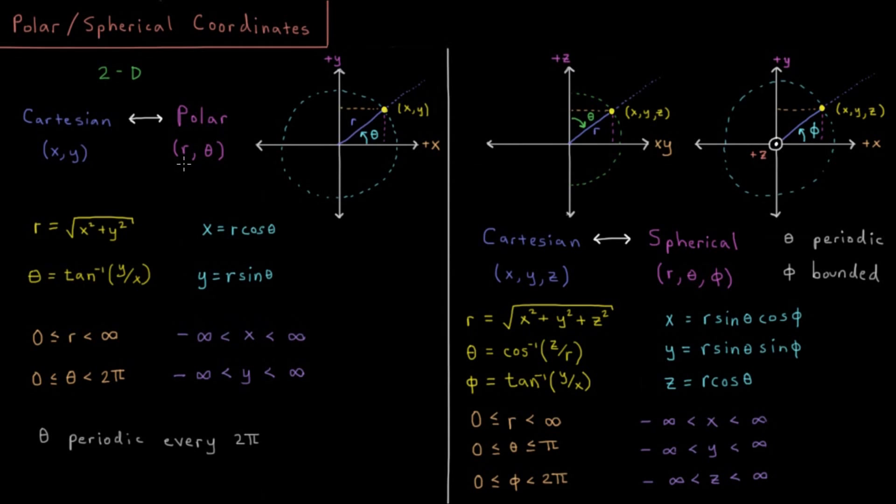So that's polar coordinates in two dimensions. The analog of that in three dimensions is what you would call spherical polar coordinates, or sometimes called spherical coordinates. So in Cartesian, in three dimensions, we would have an x, y, and z coordinates.